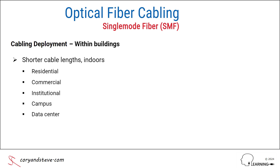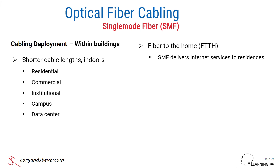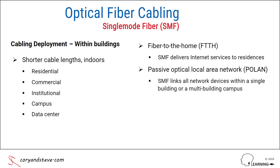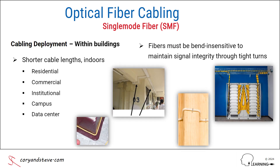Two examples of this type of deployment are fiber-to-the-home, or FTTH, where single-mode fiber delivers internet services to residences, and passive optical local area network, or POLAN, where single-mode fiber is used to link all network devices within a single building or a multi-building campus. The most important characteristic of the single-mode fibers in these deployments is the ability to tolerate tight turns, bending, and pinching without signal loss or light leaking out of a fiber.